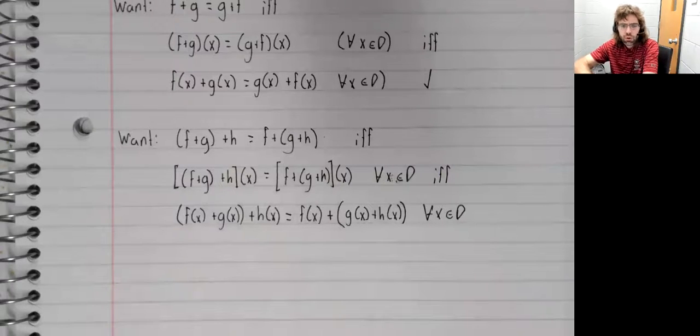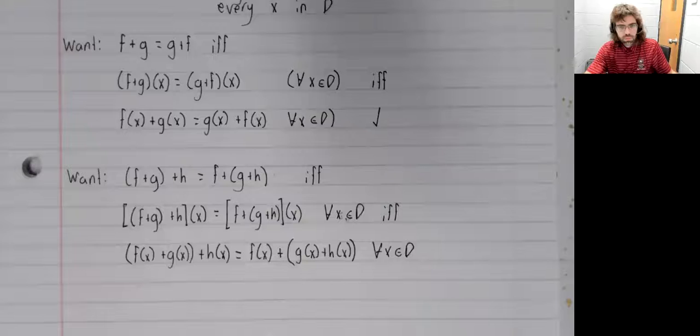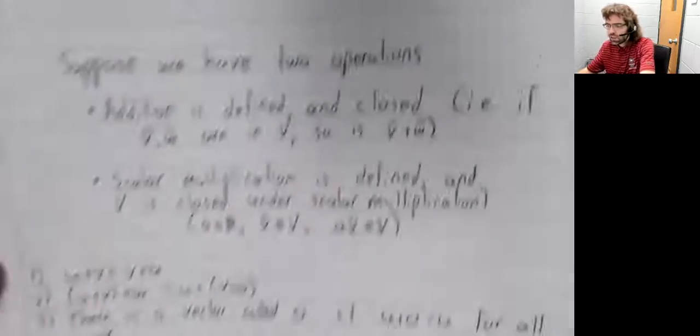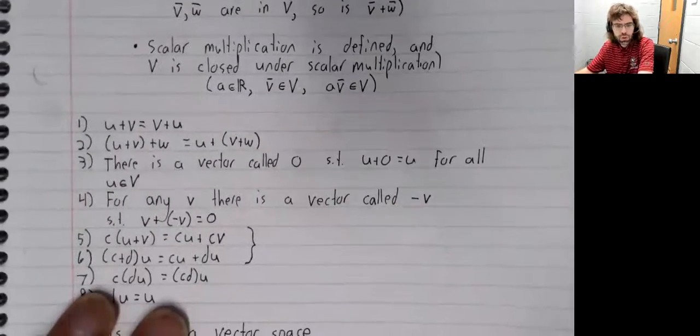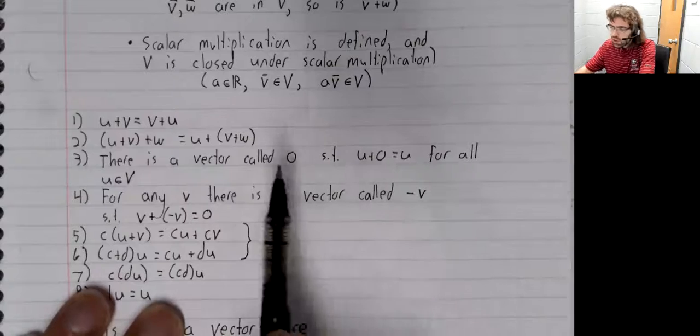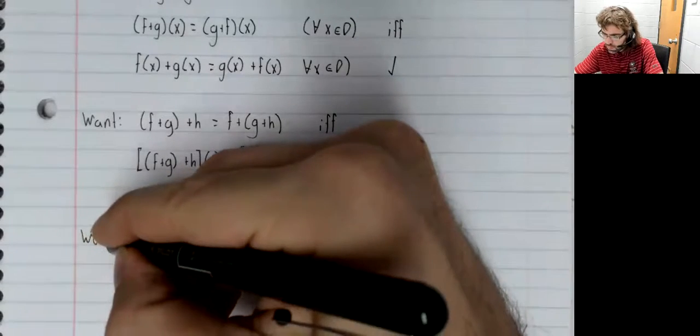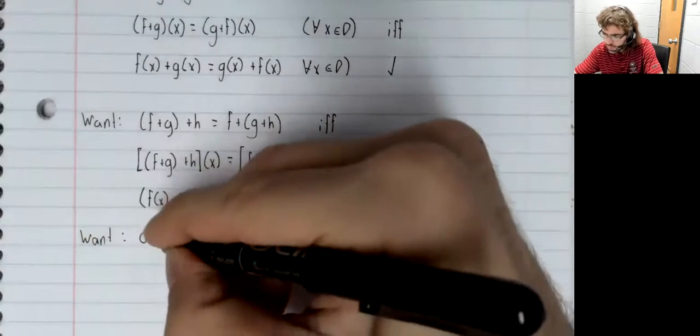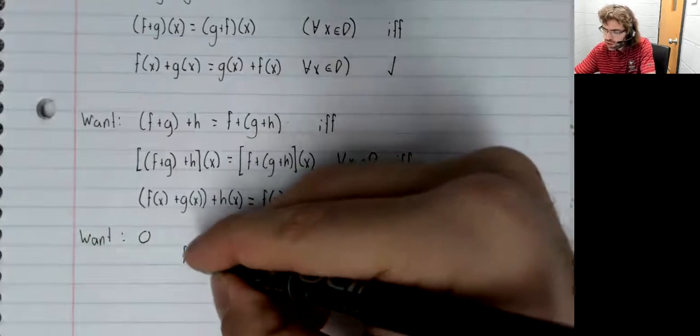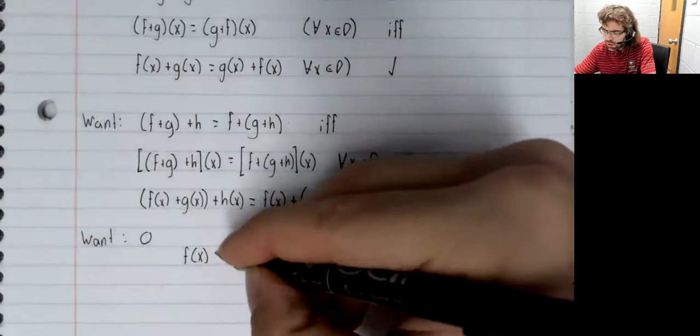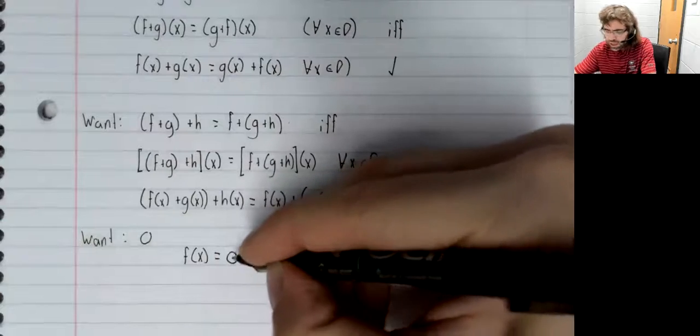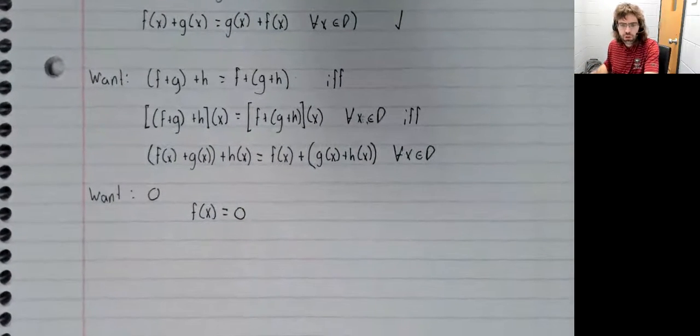It is a true statement that adding three real numbers is associative and that it doesn't matter where you put the parentheses. So now, let's just go through this list. We need a zero vector. The constant function f of x equals zero will serve that role.